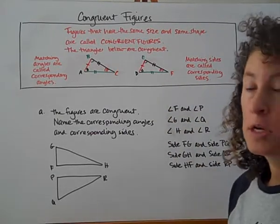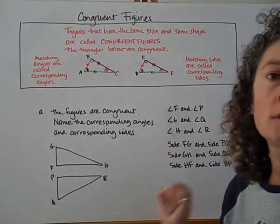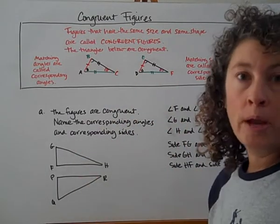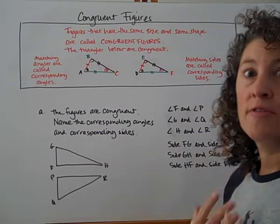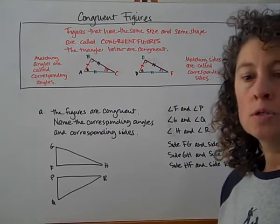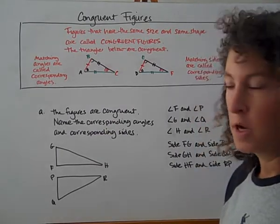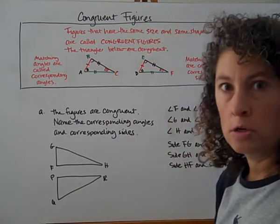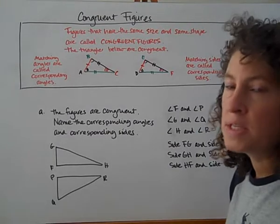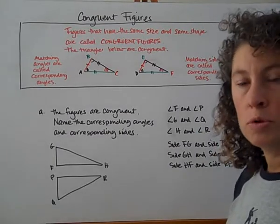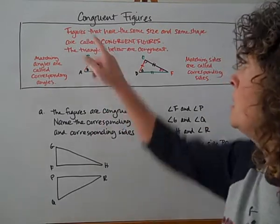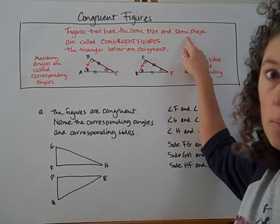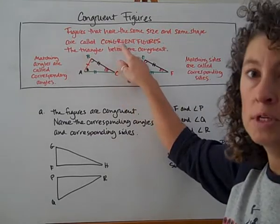Let's talk about congruent figures. In this chapter, we're going to talk about shapes, how to move them, how to compare them, and how to work with them, and then information we can get from those shapes about some of the qualities they're giving us. We're going to start with simple shapes and talk about congruent figures. Congruent is basically the mathematical geometry word for equal — figures that have the same size and the same shape are called congruent figures.